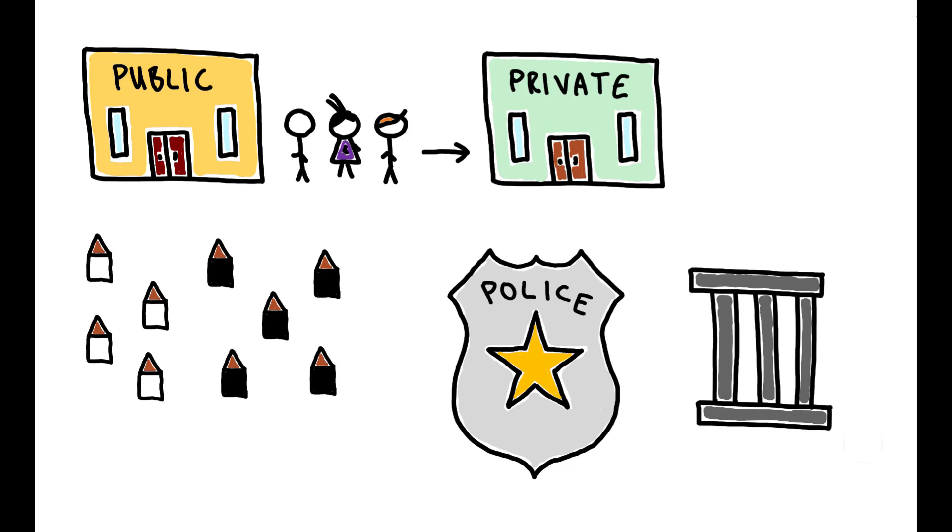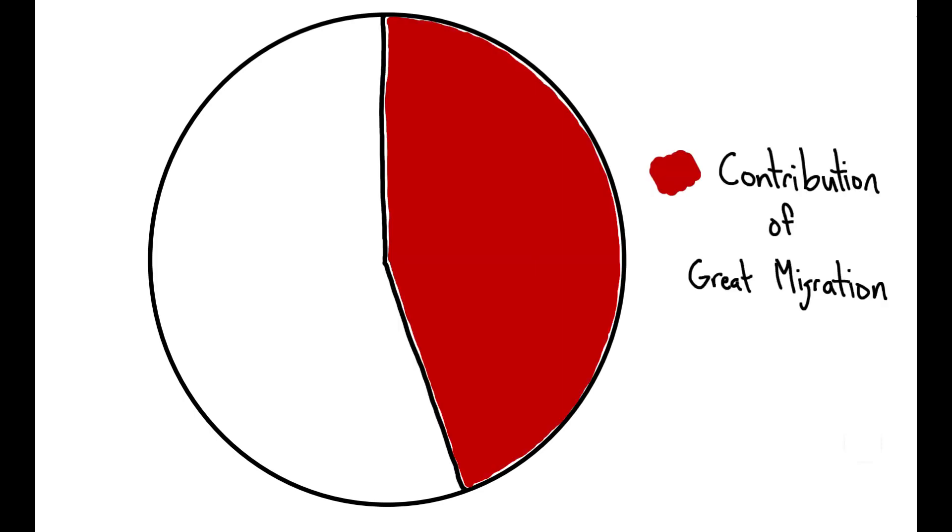Overall, she estimates that the changes in environment induced by the Great Migration account for 43 percent of the upward mobility gap between black and white men in this region today.